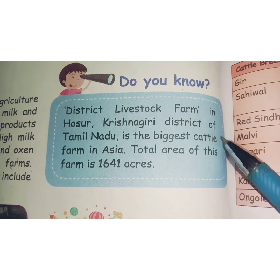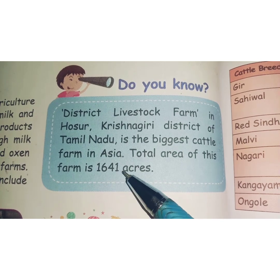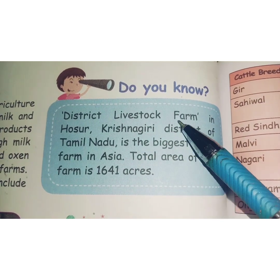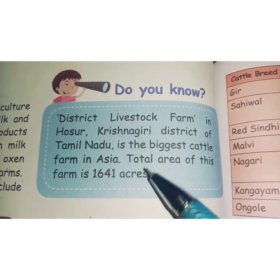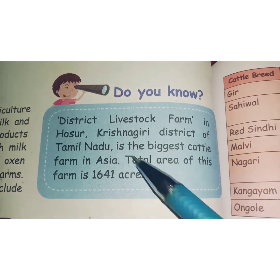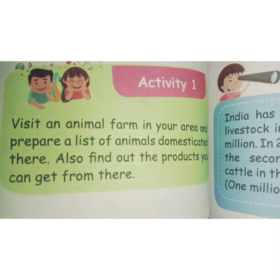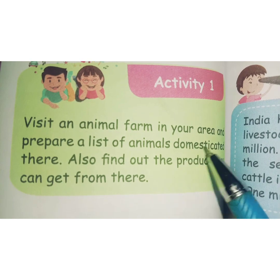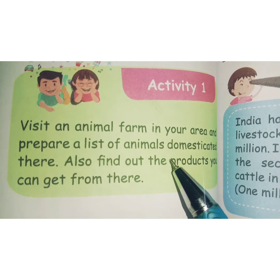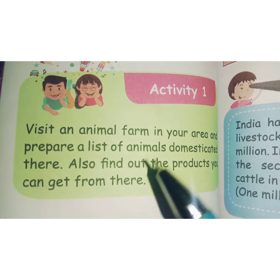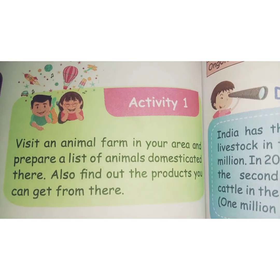The District Livestock Farm in Hosur, Krishnagiri district of Tamil Nadu, is the biggest cattle farm in Asia. The total area of this farm is 1,641 acres. Activity: Visit an animal farm in your area and prepare a list of animals domesticated there. Also find out the products you can get from there — once this pandemic is over, you can make a study visit.